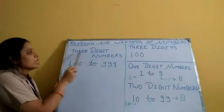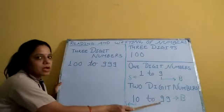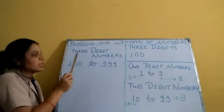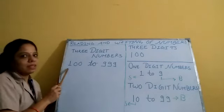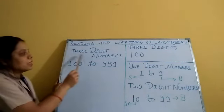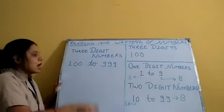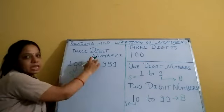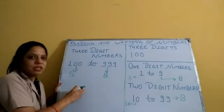3-digit numbers start from 100, because after 99 comes 100. These 3-digit numbers start from 100 and end at 999. So 100 is the smallest 3-digit number and 999 is the biggest 3-digit number.